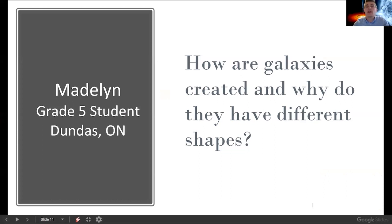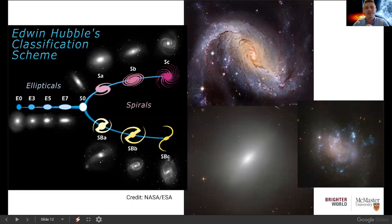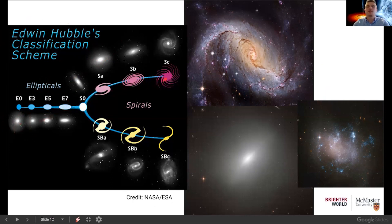Our next question comes from Madeline, a grade 5 student in Dundas, who asks: how are galaxies created and why do they have different shapes? This is something researchers and astronomers are studying in great detail at McMaster University. It's a complex topic, so let's go back to Edwin Hubble. In the early 1900s, he developed a classification scheme breaking galaxies into two types: ellipticals — round spherical galaxies with a bright center — and spiral galaxies like the Milky Way, with a bright center and spiral arms.